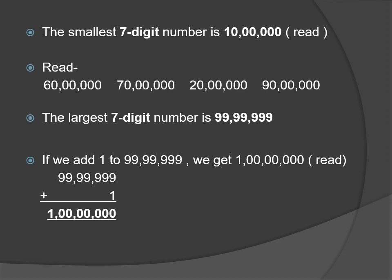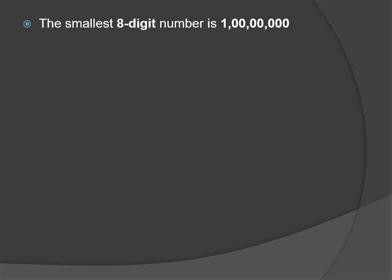Now move on to eight-digit numbers. If we add one to 99,99,999, we get one crore — the number 1 along with seven zeros. So one crore becomes the smallest eight-digit number.